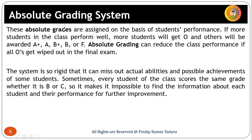Absolute grades are assigned based on student performance. If more students in the class perform well, more students will get O, A plus, A, B plus, and B. For instance, if all 10 students in a class score between 90 and 100, every student gets O grade. However, this system is so rigid that you cannot differentiate which student performed better — a student scoring 91 and one scoring 99 both get the same O grade.